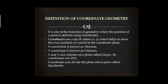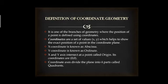The ordered pair, x and y, consists of x-coordinate and y-coordinate, known as abscissa and ordinate respectively. The x and y-axis intersect at a point called origin, where the coordinates are (0, 0). The two coordinate axes divide the plane into four parts called quadrants.